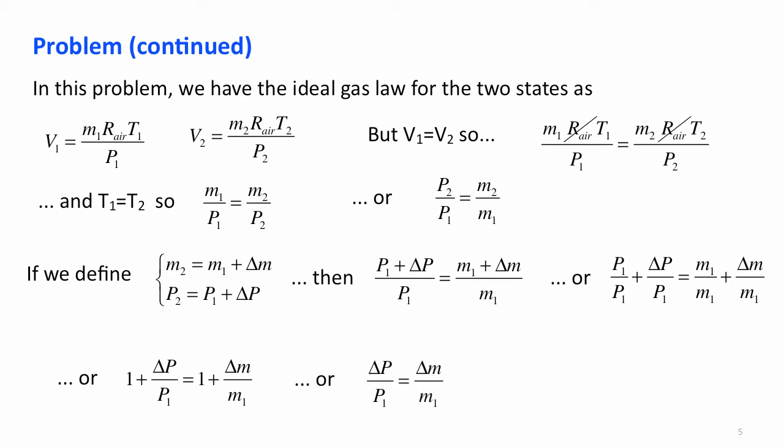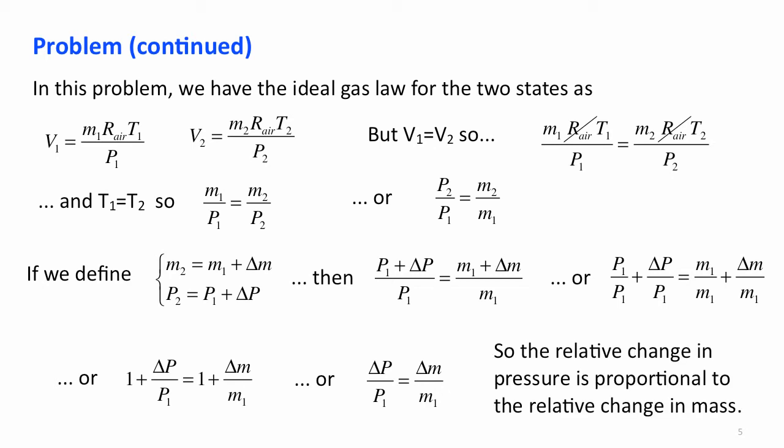Of course, that's simply delta P over P and delta M over M. So, what we get is the relative change in the pressure is proportional to the relative change in the mass.